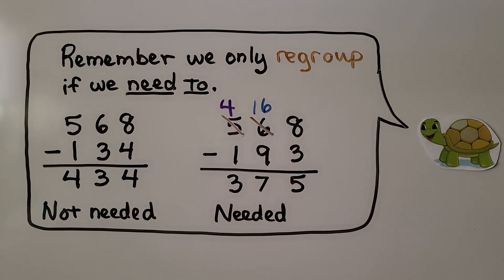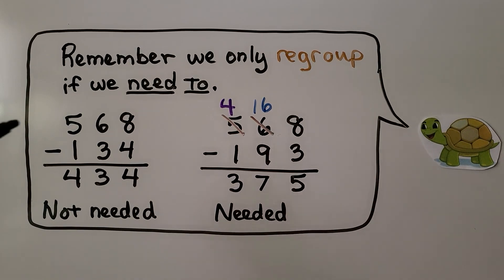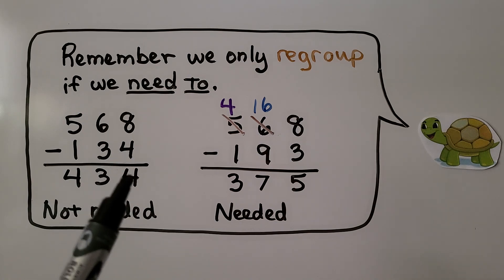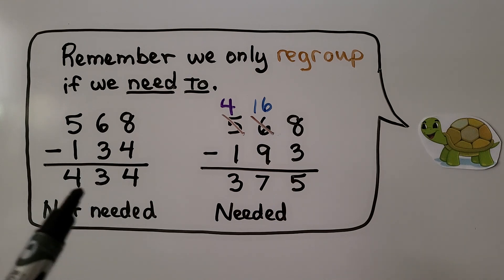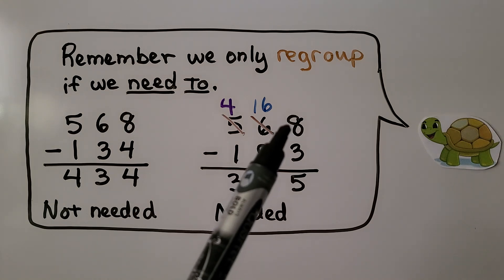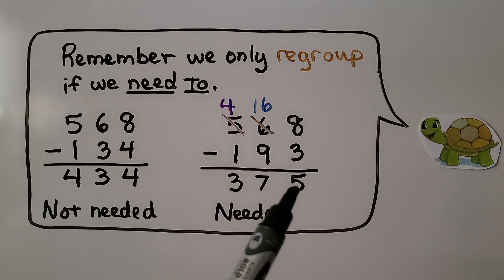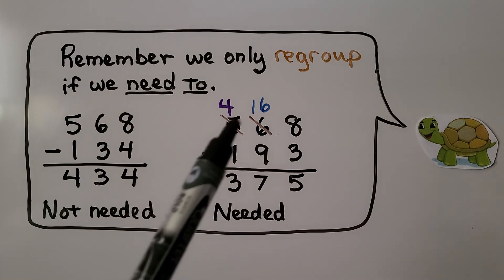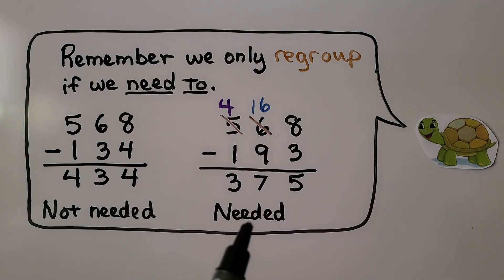Remember, we only regroup if we need to. If we're subtracting and we have 568 minus 134, we don't need to regroup: eight take away four is four, six take away three is three, five take away one is four — we didn't need to regroup at all. But in another problem, we can do eight minus three which is five, but when we have six tens and want to take nine tens away, we don't have enough, so we need to regroup. We only regroup if we need to — if there aren't enough in the minuend.